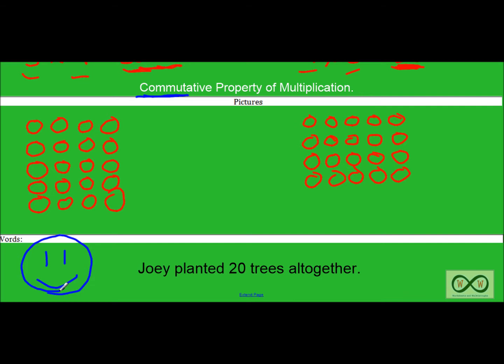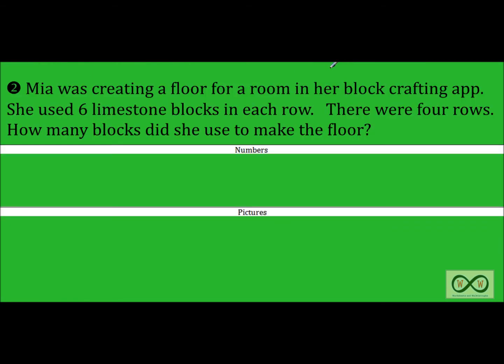Let's try the second problem. Let's read through it to get the flow. Mia was creating a floor for a room in her block crafting app. She used six limestone blocks in each row. There were four rows. How many blocks did she use to make the floor? Let's go through this sentence by sentence and look for our math clues along the way.